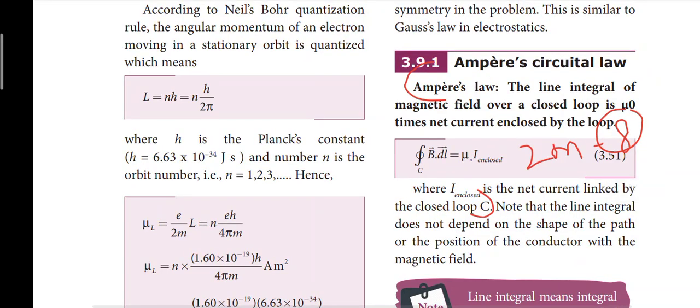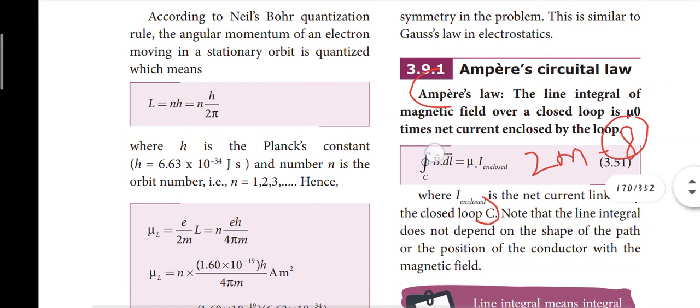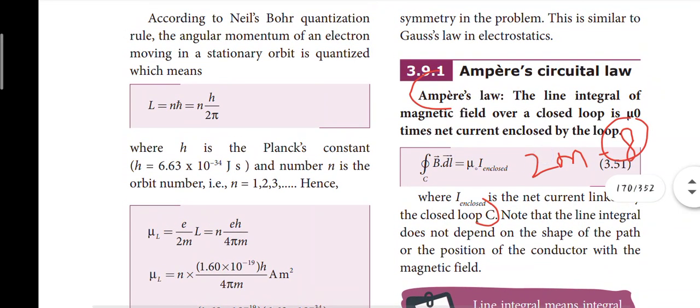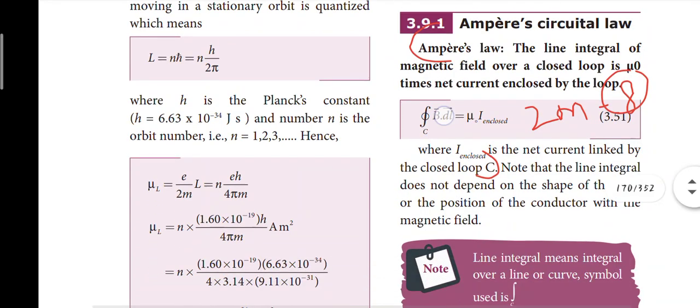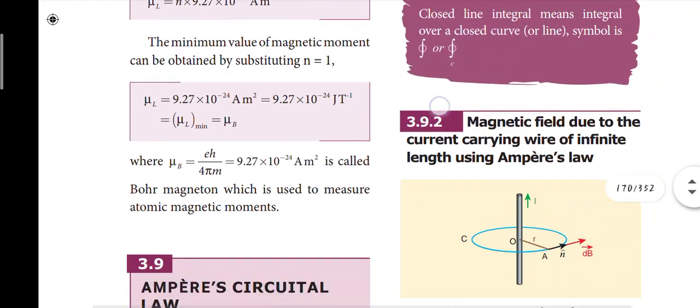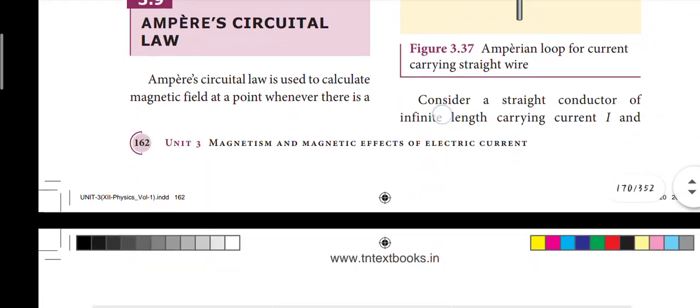Ampere's circuit law — an important two-mark question. The black lines plus equation: the line integral in a closed loop equals μ₀ times the net current linked by the closed loop. This is the eighth question.